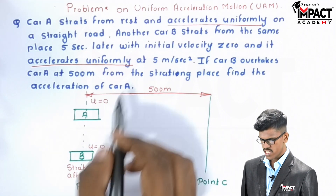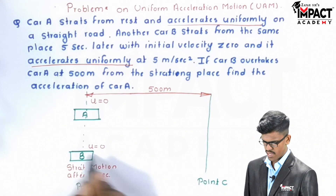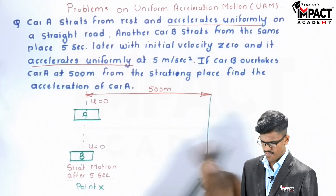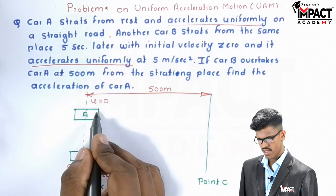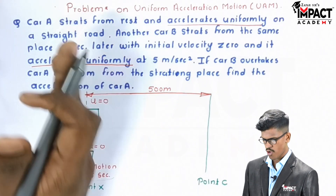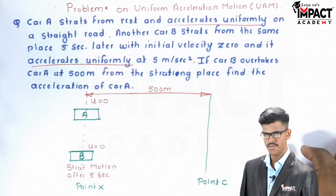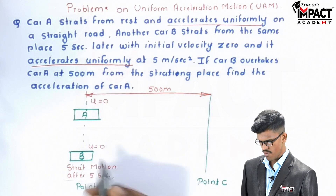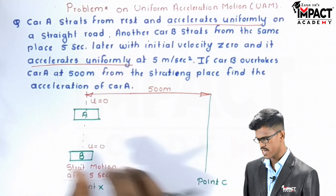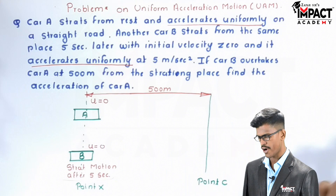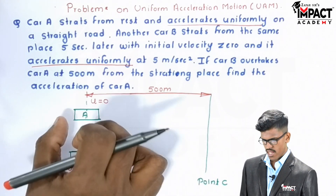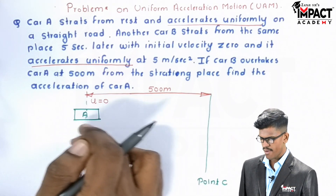In this question, car B starts motion 5 seconds after car A. For example, if car A requires 30 seconds to reach from the start point to point C, then car B will require 30 minus 5, which is 25 seconds, to reach point C. So let's say car A requires time T seconds to travel from start point X to point C.